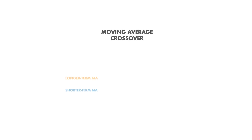Lastly, I will walk through a common trading strategy using moving averages called the moving average crossover. This involves taking two moving averages with offsetting periods, and entering or exiting a position whenever the shorter-term MA crosses above or below the longer-term MA.